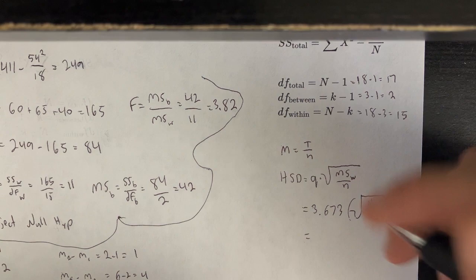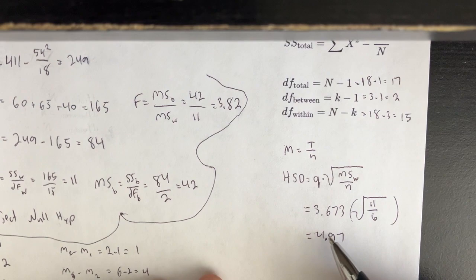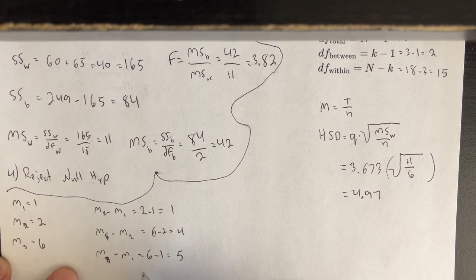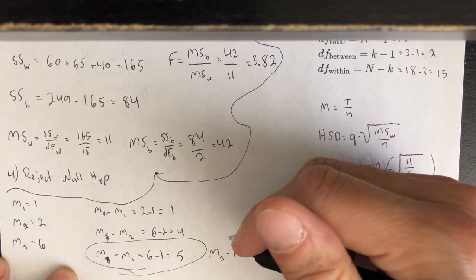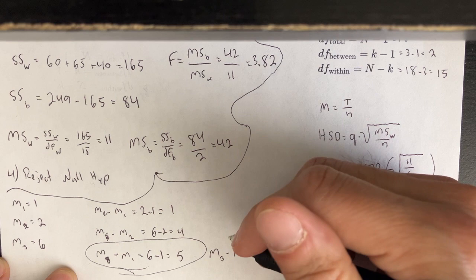Comparing our differences to 4.97, we see that the third mean minus the first mean was 5, which is greater than 4.97. So there is a statistically significant difference between the first and third group means.